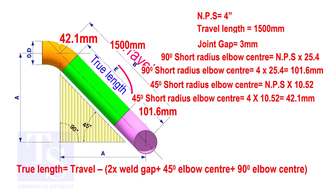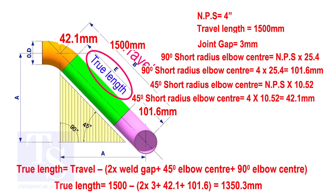To calculate the true length of the pipe, subtract two weld gaps plus both elbow centers from the travel length. The true length of the pipe is 1350.3 millimeters.